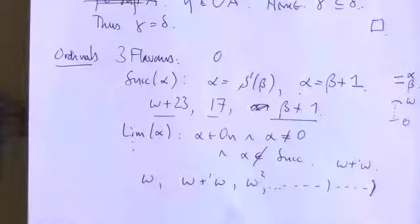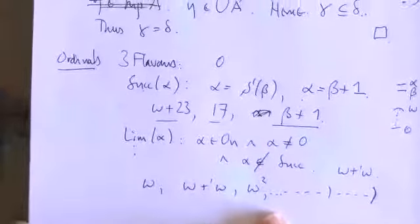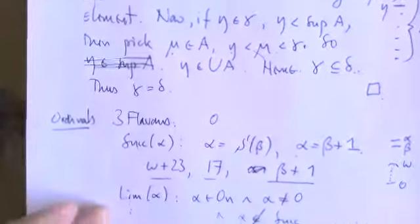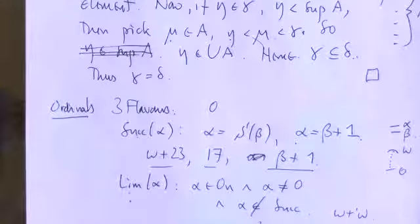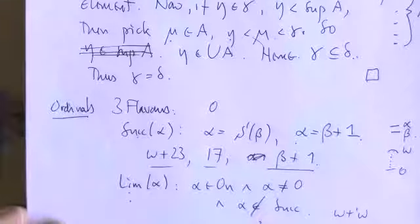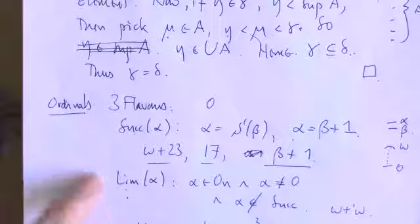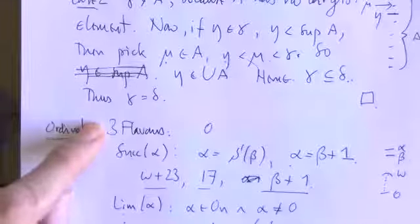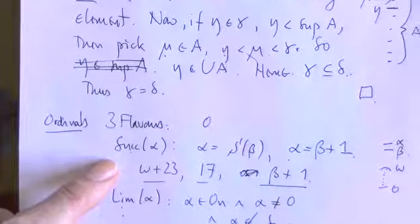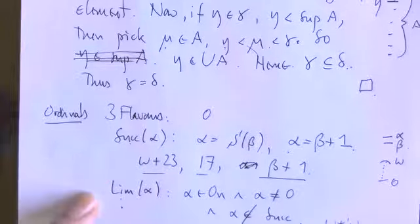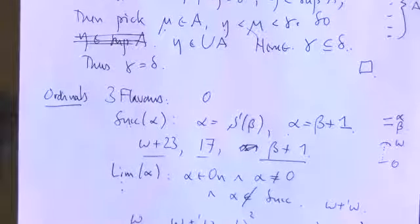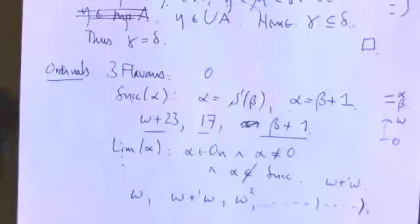Often in arguments we have to distinguish whether we're talking about successors and limits. For example, we're going to do proofs by induction on ordinals, and we'll now have a separate extra case to deal with. For natural numbers we said something is true for a base case, and if it's true for n it's true for n+1. But now to prove something by induction or define something by recursion on ordinals, we have to do things for a base case zero, show what happens at successor stages, and then say what happens at the next limit. So there's an extra clause in our definitions and proofs — this is a feature of transfinite recursion.